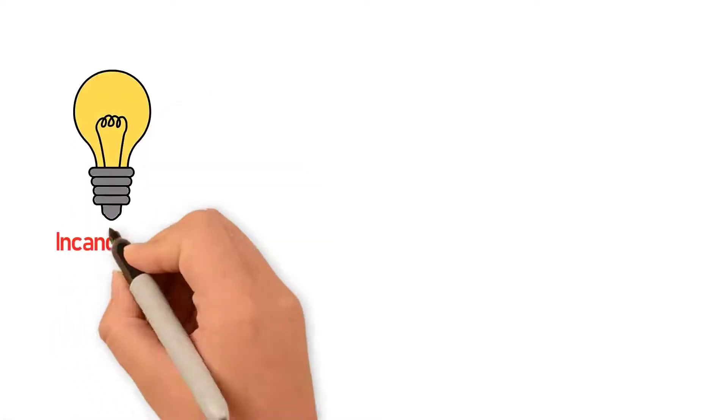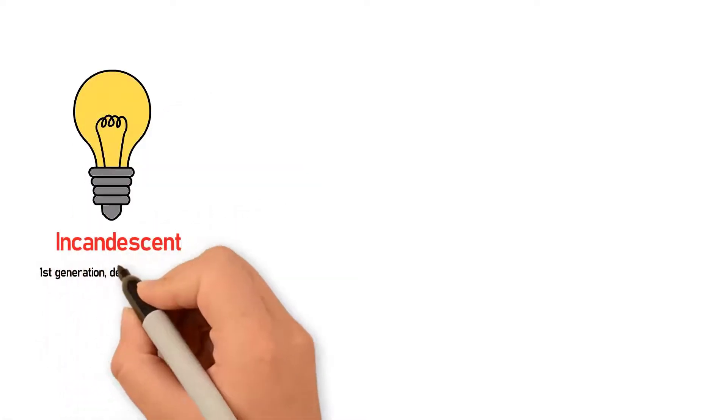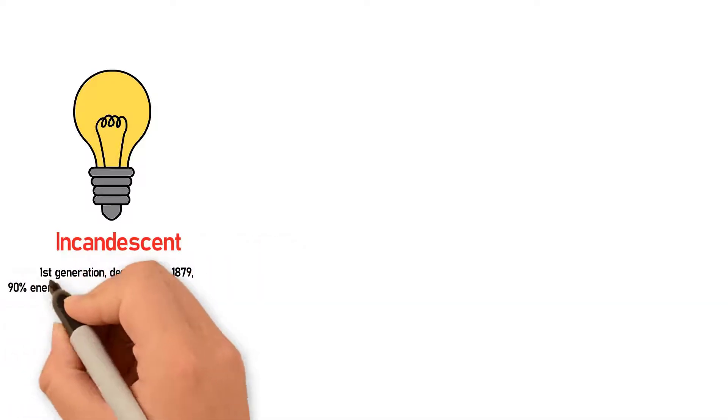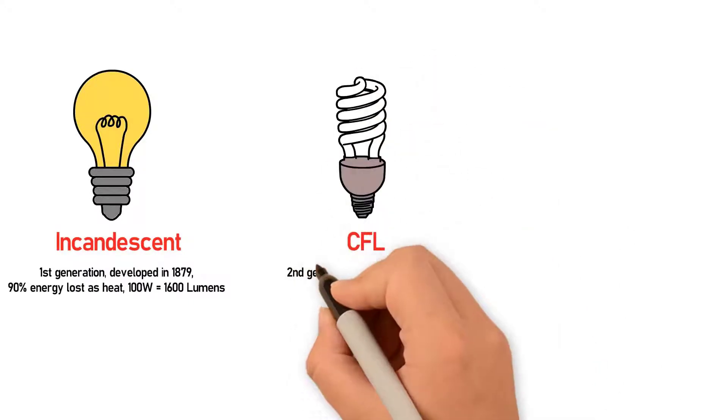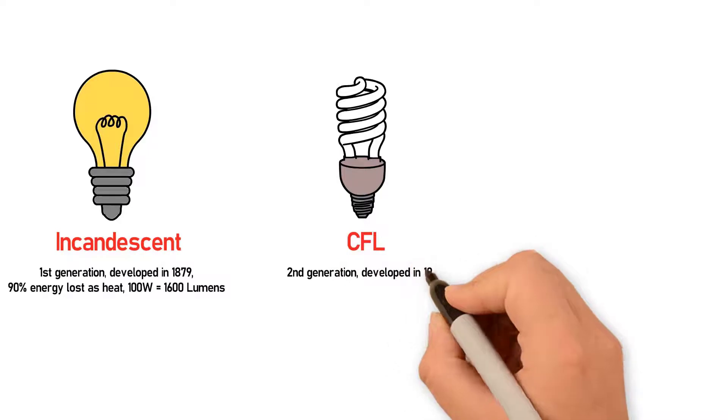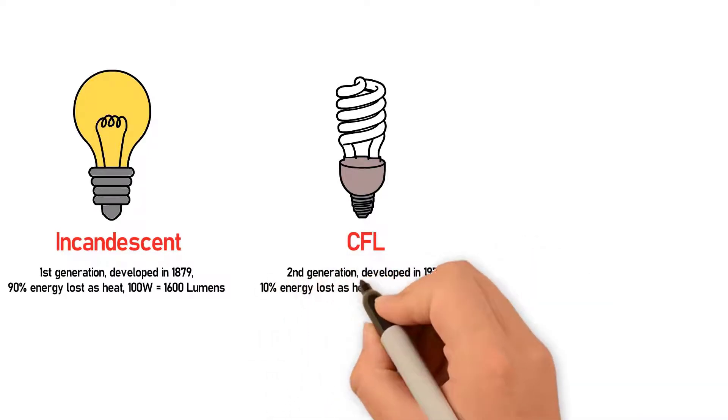Incandescent, first generation, developed in 1879: 90% energy lost as heat, 100 watts equals 1,600 lumens. CFL, second generation, developed in 1976: 10% energy lost as heat, 27 watts equals 1,600 lumens.